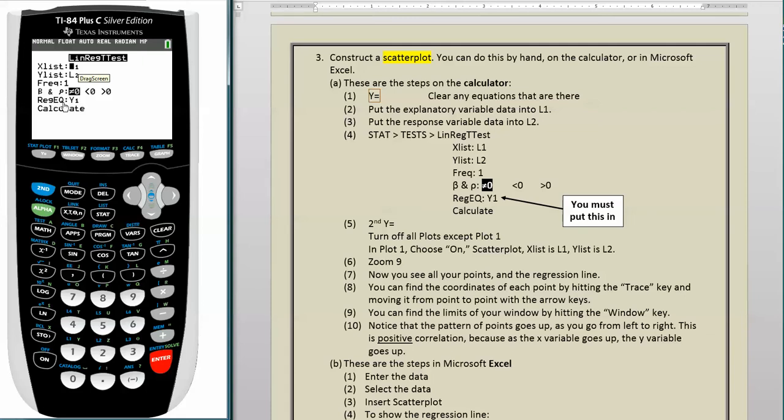Now, regEQ, that stands for regression equation. You may very well have a blank space there, and if that's the case, you're going to want to change that to Y1. So I'm going to come down there and go through those steps. Assuming that this is blank, you're going to hit the VARS button, you're going to arrow over to YVARS, you're going to hit ENTER, you're going to hit ENTER again, and then you should get a Y1 there, and that's what you want.